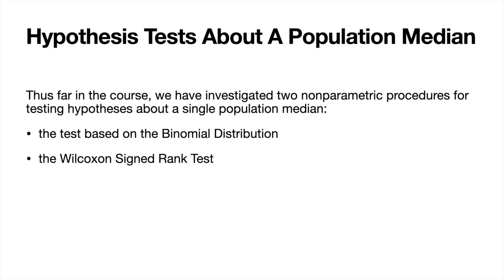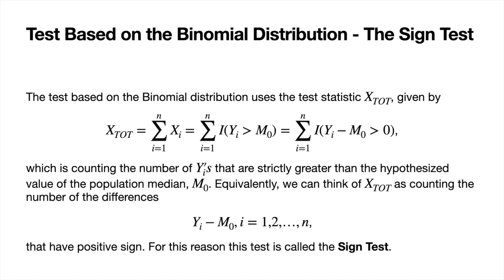Up to this point, we have looked at two nonparametric procedures for testing hypotheses about the median of a single population. The two procedures we've looked at are the sign test and the Wilcoxon signed rank test. The first procedure we looked at, we're now giving the name the sign test.